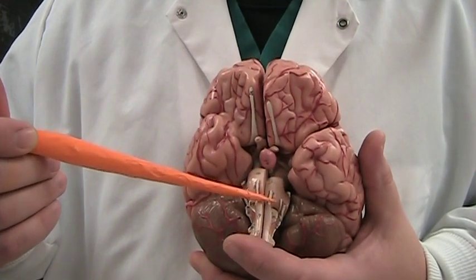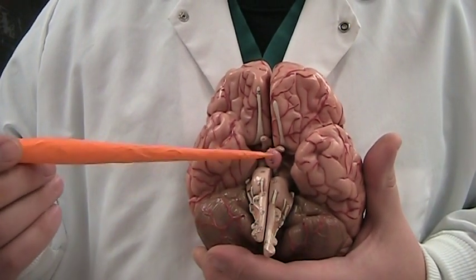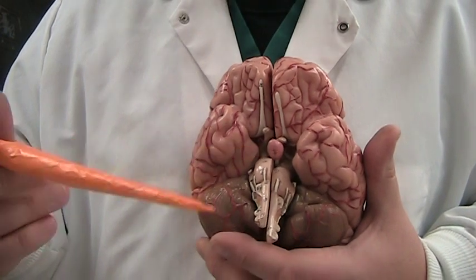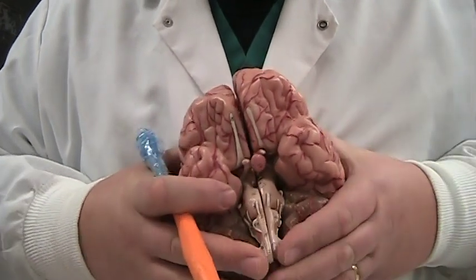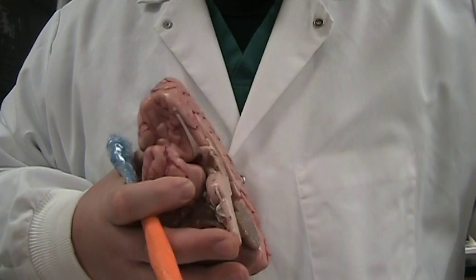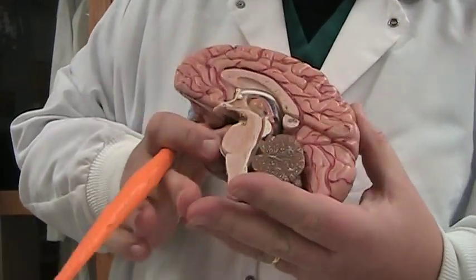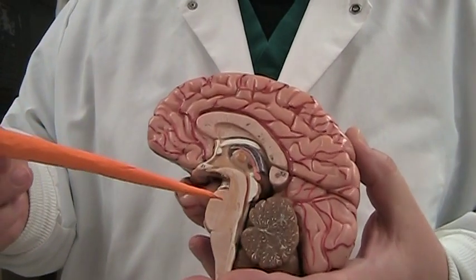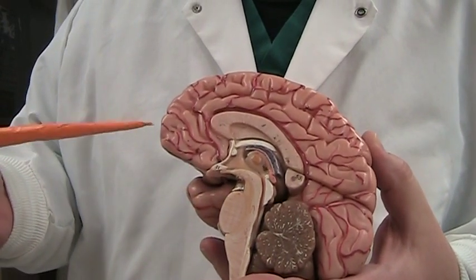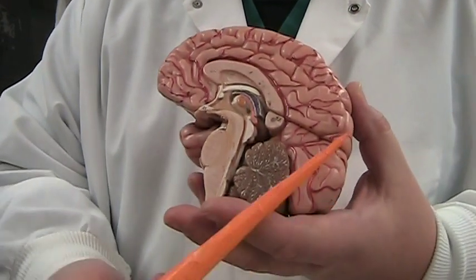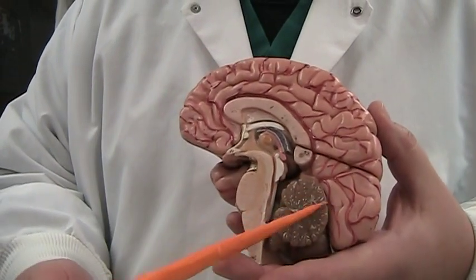Here's the pons, medulla oblongata, pituitary gland. This is the anterior, this is posterior, cerebellum.